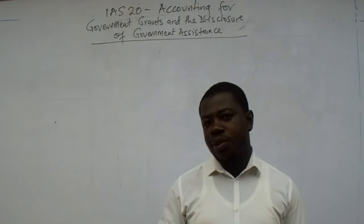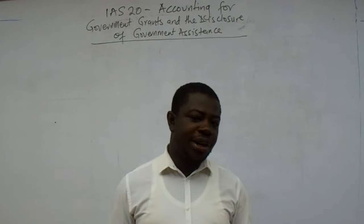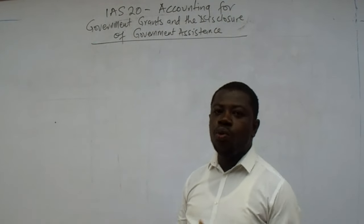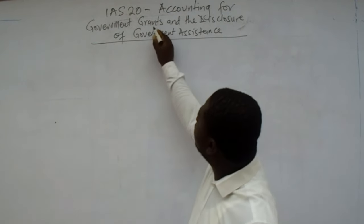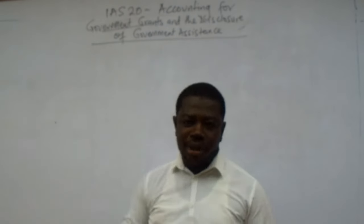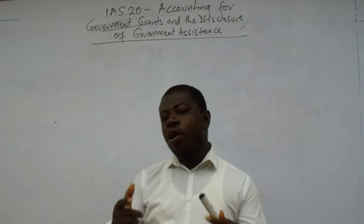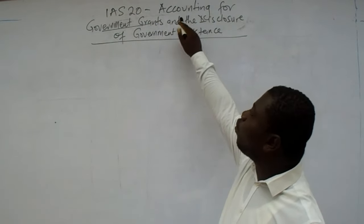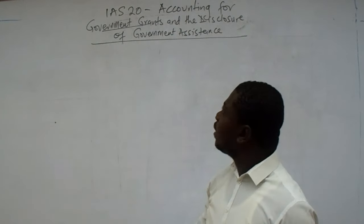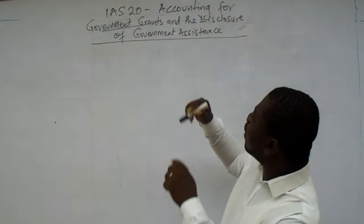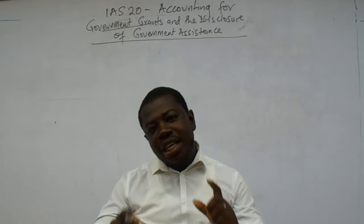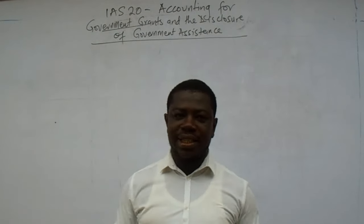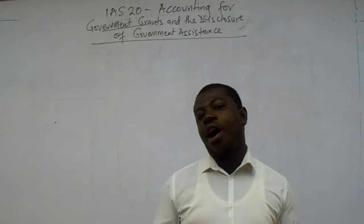The name looks very long but it's a very simple standard. The name is Accounting for Government Grants and the Disclosure of Government Assistance. We see two key words: Government Grants and Government Assistance. What is more important is that there is a different verb attached to each. We account for the grants, but when it comes to the assistance, we disclose. That is a very key thing we need to understand.